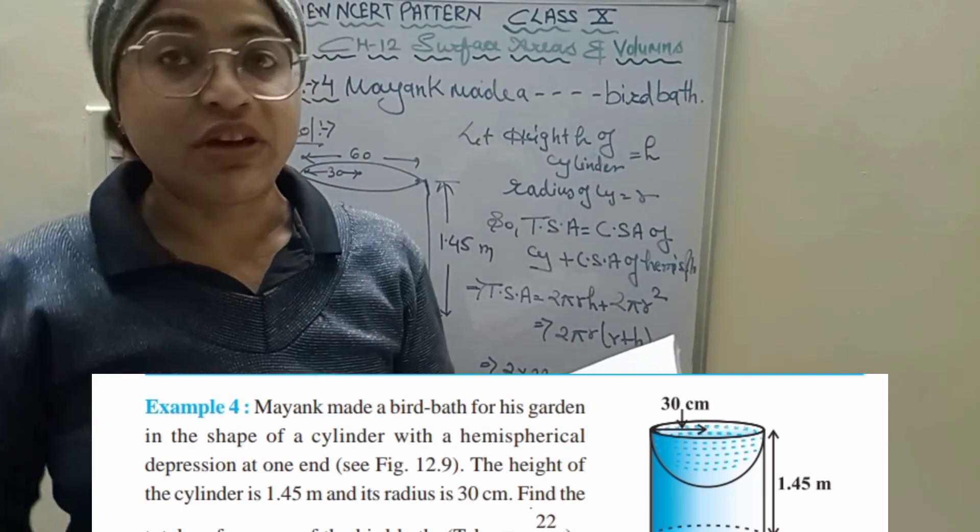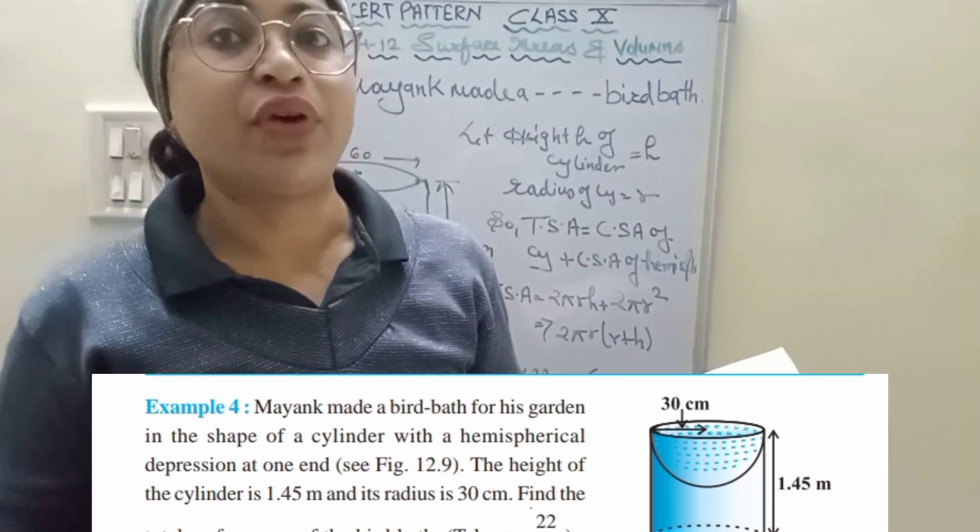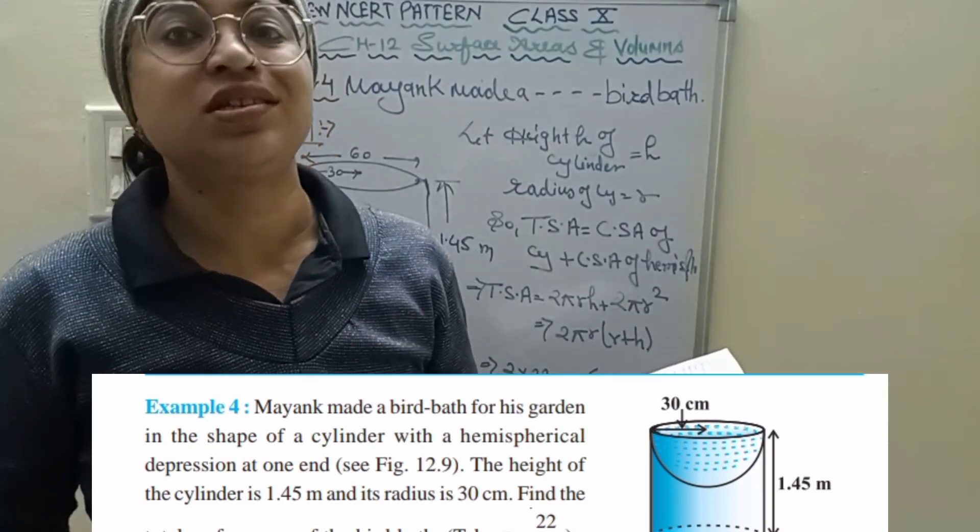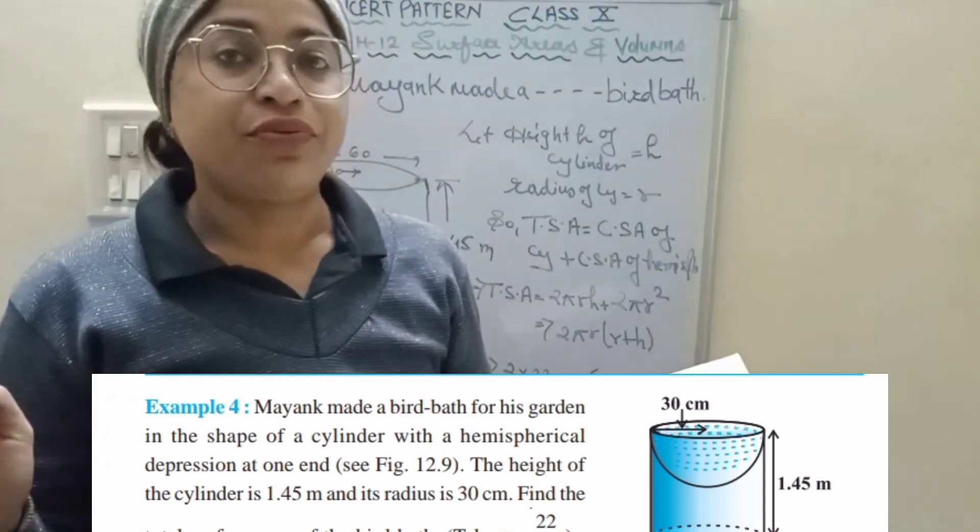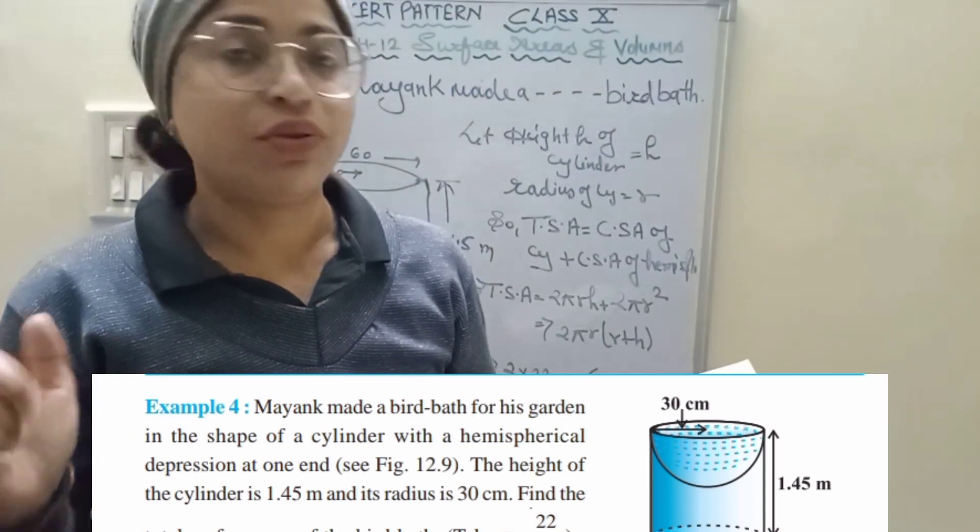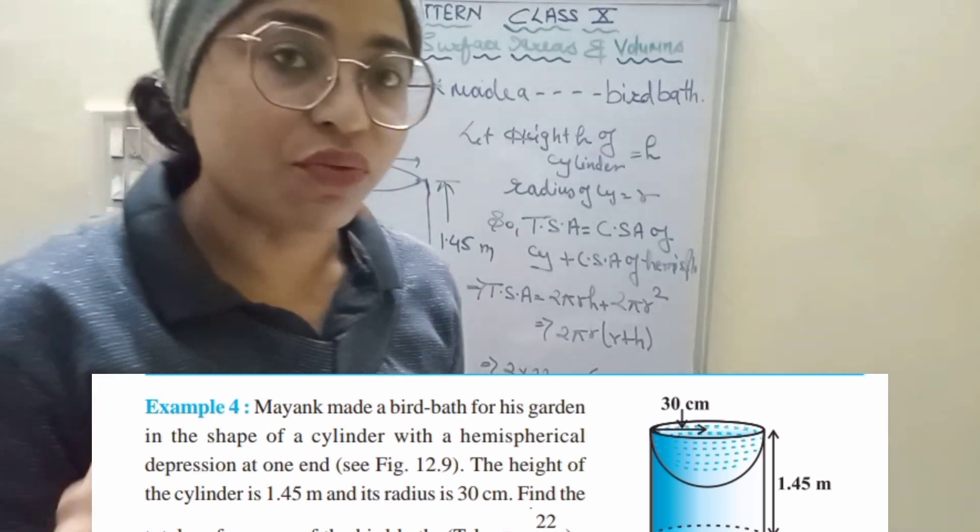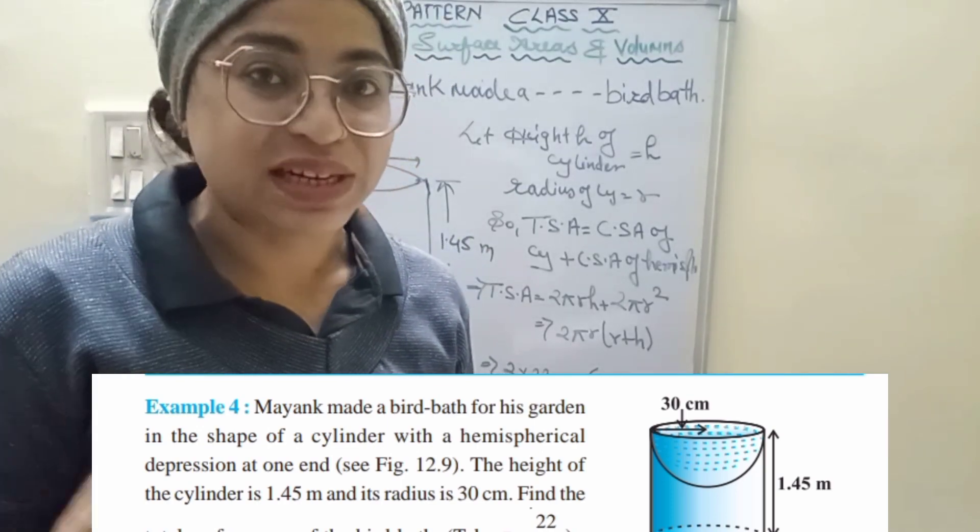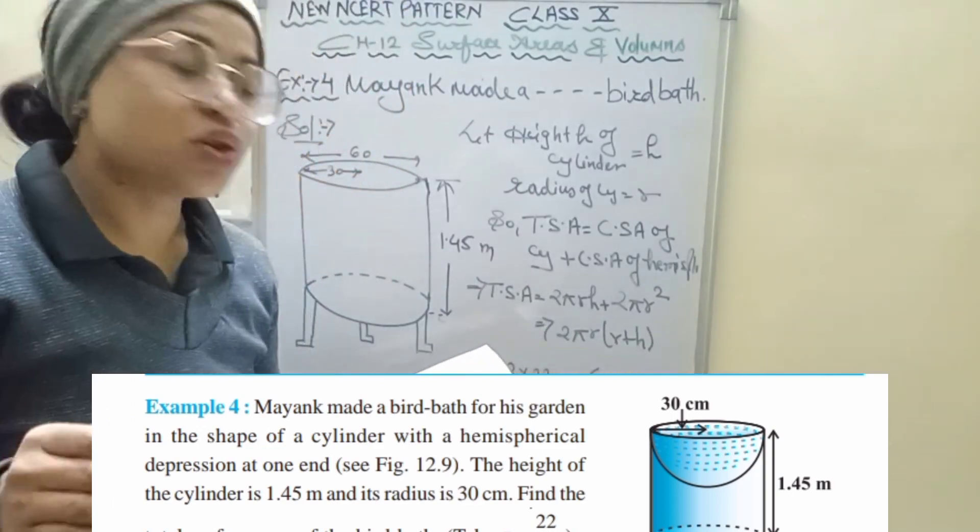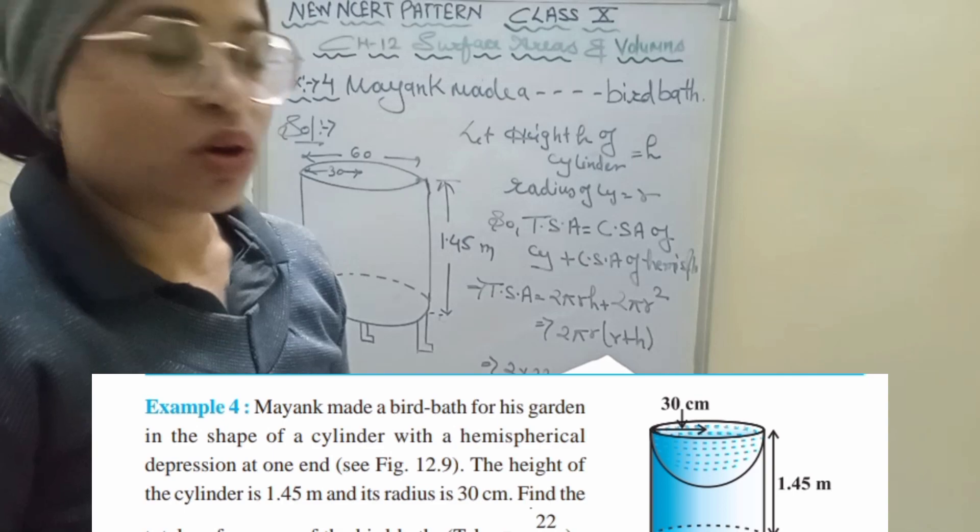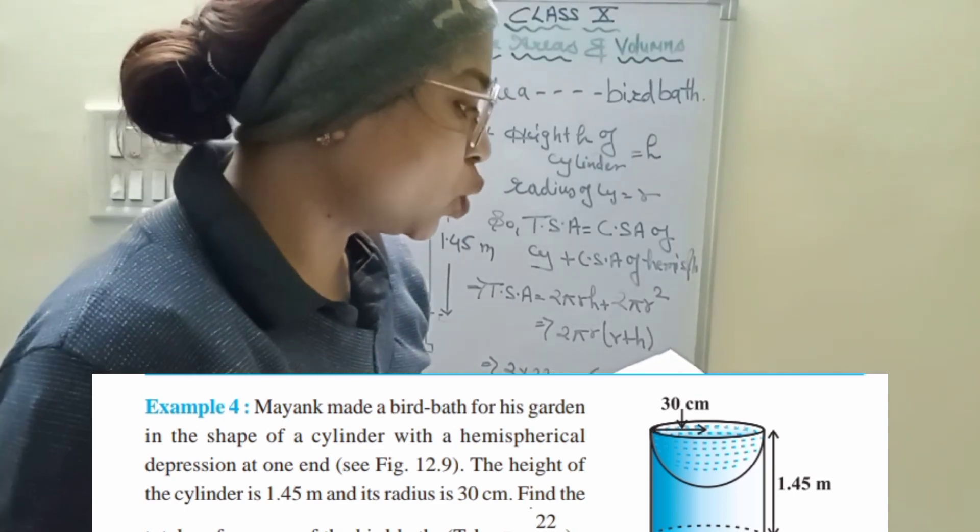The height of the cylinder is 1.45 meters. We change this to centimeters: 1.45 meters equals 145 centimeters. And the radius of this portion is 30 centimeters, so the diameter is 60 centimeters.